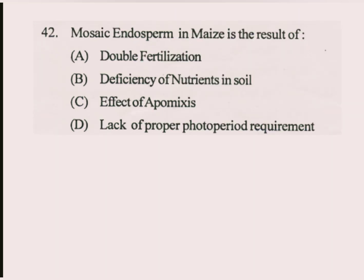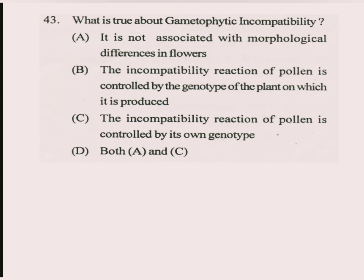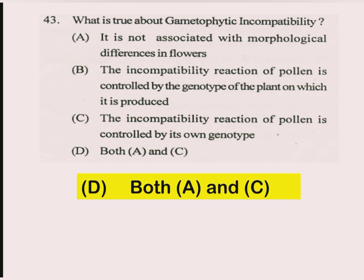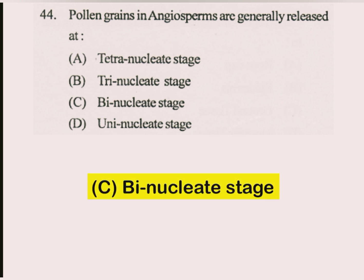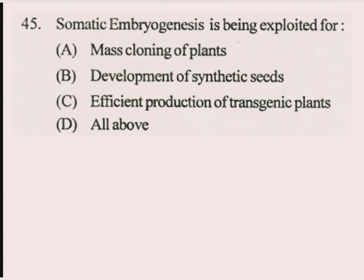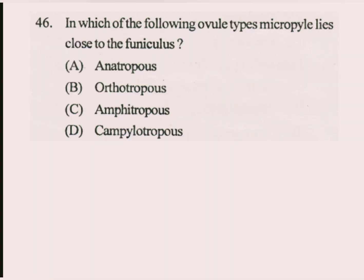Question number 42. Mosaic endosperm in maize is the result of double fertilization. Question number 43. What is true about gametophytic incompatibility? The answer is both A and C. Question number 44. Pollen grains in angiosperms are generally released at binucleate stage. Question number 45. Somatic embryogenesis is being exploited for development of synthetic seeds. Question number 46. In which of the following ovule types does the micropyle lie close to the funicle? The answer is Anatropous.